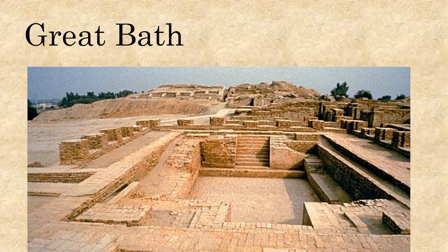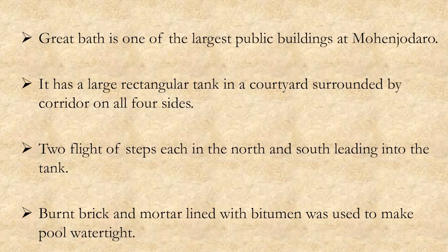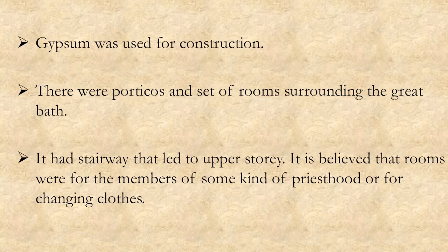The first archaeological source we are going to study is the Great Bath, which is similar to a swimming pool in today's world. Great Bath was made of burnt brick and gypsum. In the surrounding there were pillars called porticos and a set of rooms, probably used for changing clothes or performing rituals. It had steps at the north and south for entry and exit. The base of the tank was lined with bitumen and mortar to make it watertight. There were also rooms on the upper storey with stairways provided to reach them. These rooms are believed to have been used by the priests or ruling class.